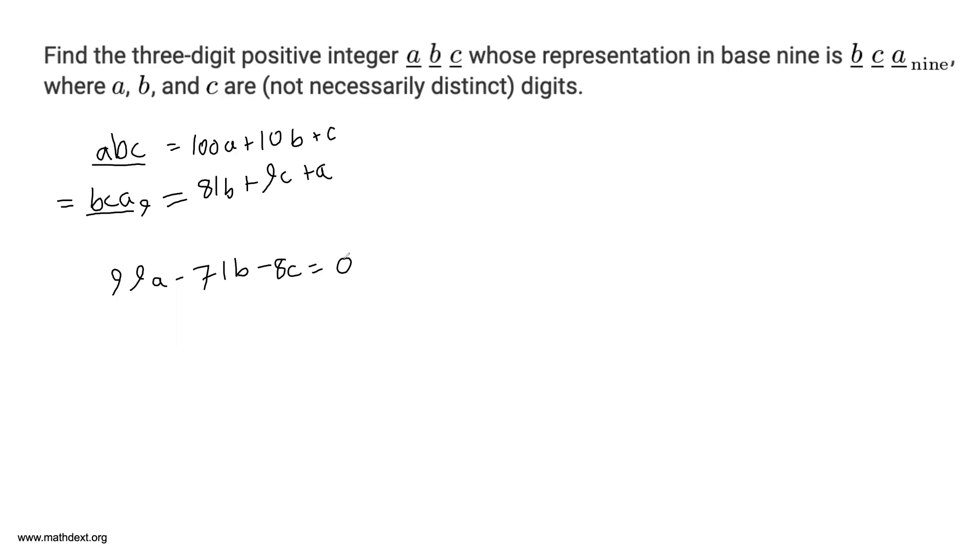So how are we going to solve this? First of all, well, one thing you could do is when you have a Diophantine equation like this, why don't we try some values of A because 99 is a pretty big coefficient. So let's try some values of A and see what we get.